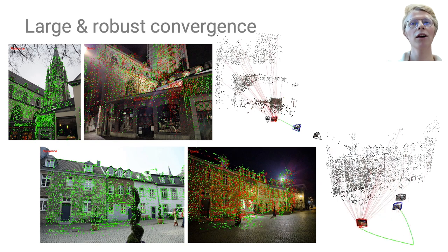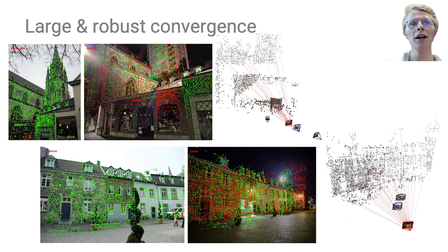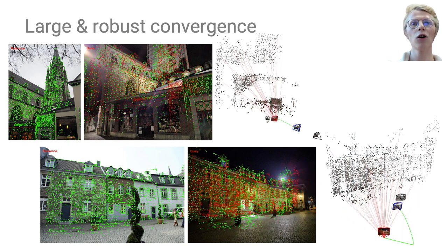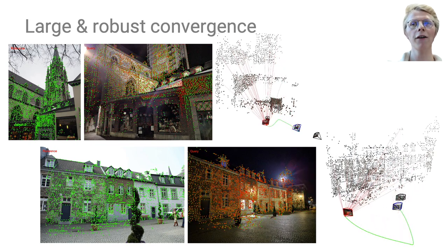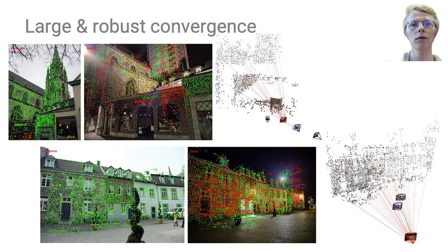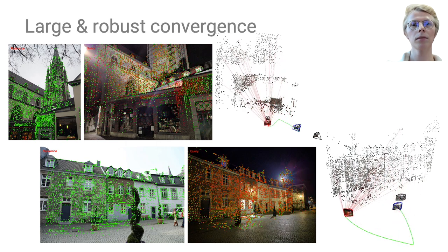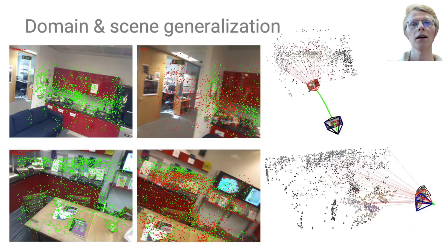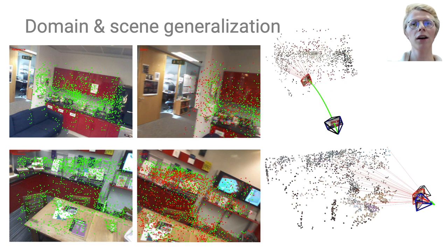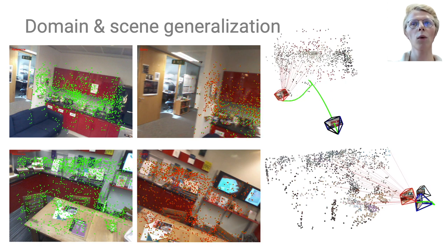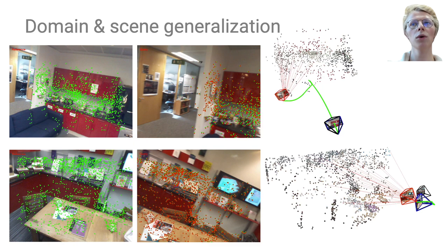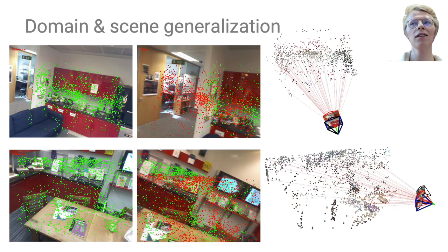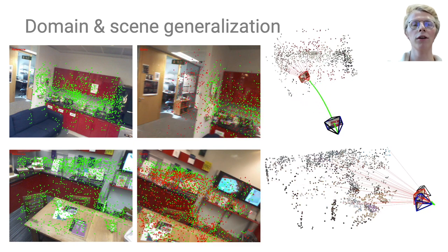Direct alignment usually cannot handle large viewpoint or illumination changes. In stark contrast, PixLoc exhibits a large and robust basin of convergence, thanks to the multi-level features. By learning only visual features that are generic, PixLoc generalizes well across environments. A model trained only on outdoor scenes provides accurate localization with indoor data that exhibits significantly less texture and more motion blur, as shown here.